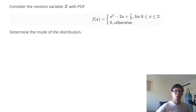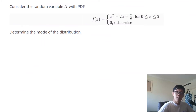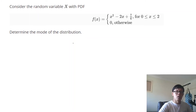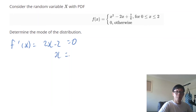So jumping into a question: consider the random variable x with PDF f(x) = (x² − 2x + 7) / 6, defined within 0 to 2. Determine the mode of the distribution. First things first, let's find the stationary points. The derivative is 2x − 2; setting that equal to 0 gives us a stationary point at x = 1.